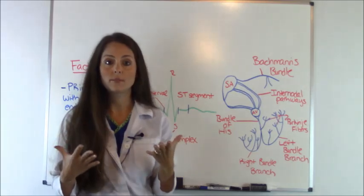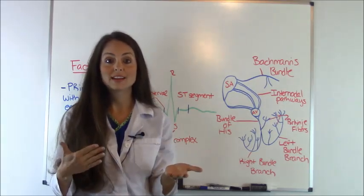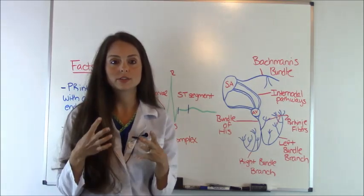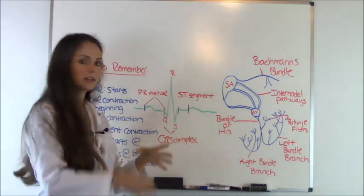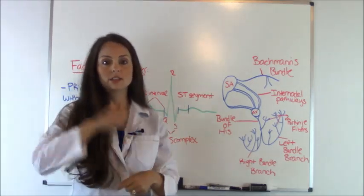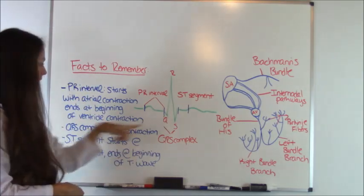Now, the QRS complex. Remember, that is the contraction of the ventricles. Your ventricles are so big that they're causing this huge impulse on this electricity conduction. And you see the QRS interval. So, complex.